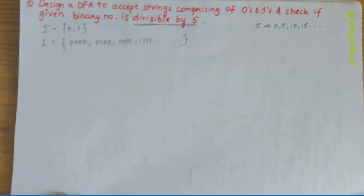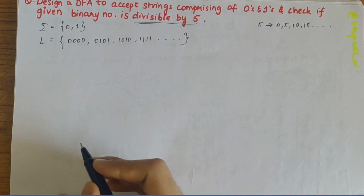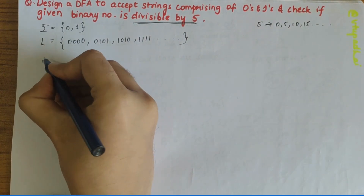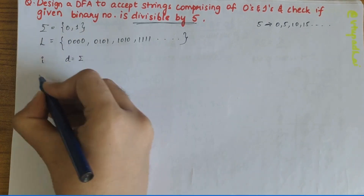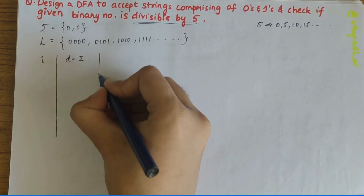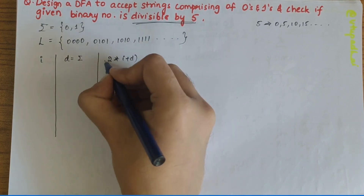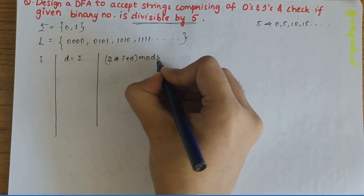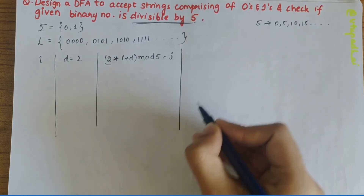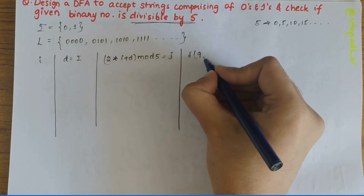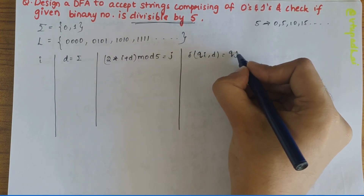Now that we have written the language set and the sigma value, we have to design a transition table. Here D is from sigma. The formula is: J = (2I + D) mod 5, and the transition function δ(qi, D) = qj.